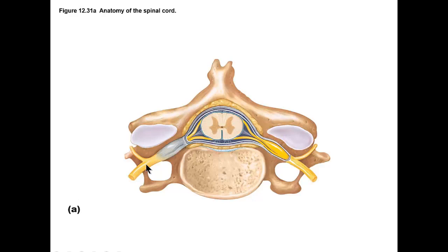What is a nerve? A nerve is a bundle of myelinated axons — specifically, a bundle of myelinated axons outside the central nervous system. Because the central nervous system is the brain and spinal cord, and these nerves are not within it. They extend off the spinal cord, or in the case of cranial nerves, off the brain. That is the definition of a nerve.